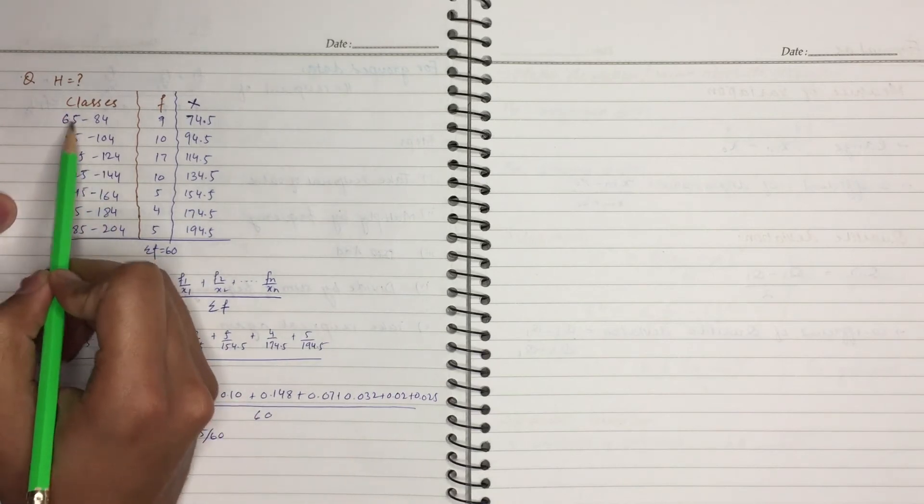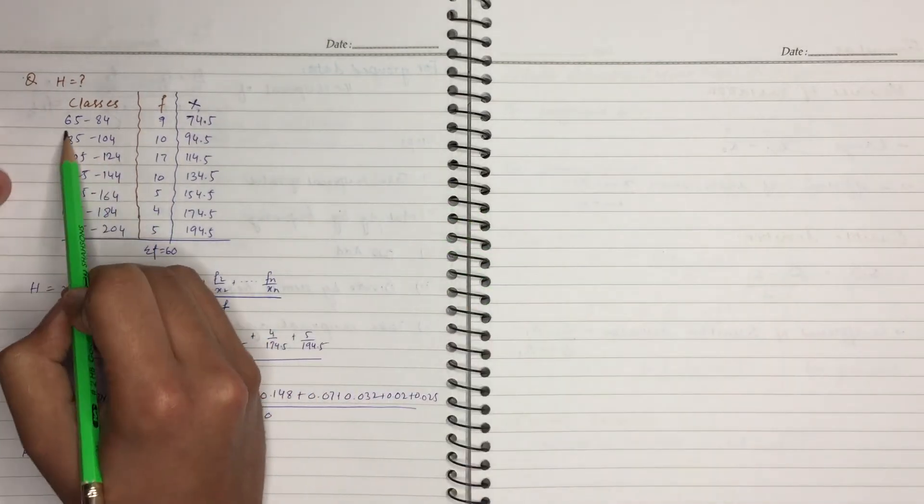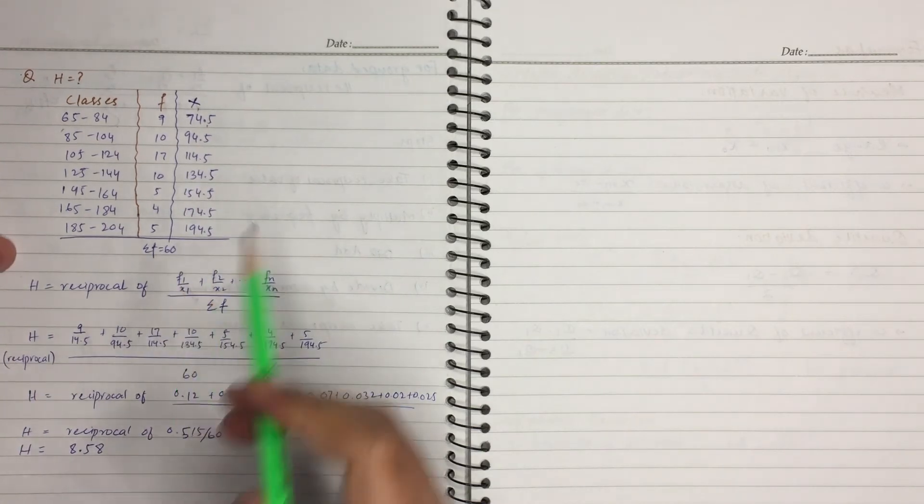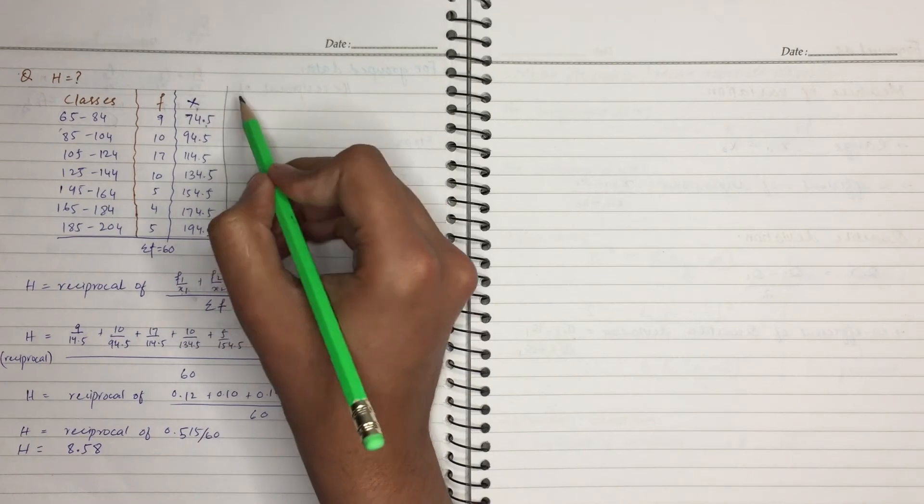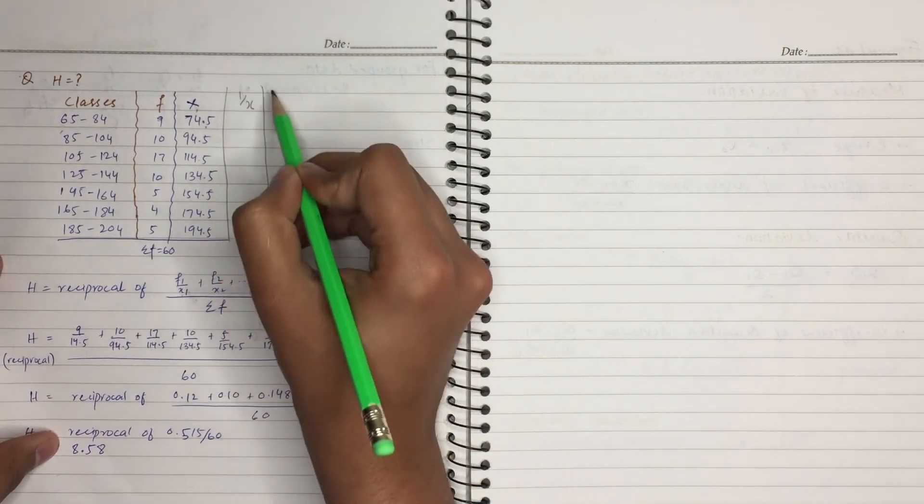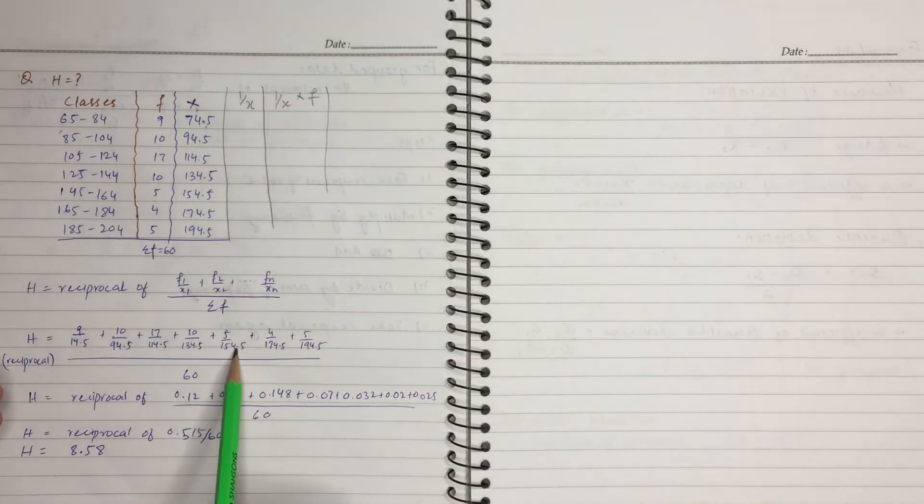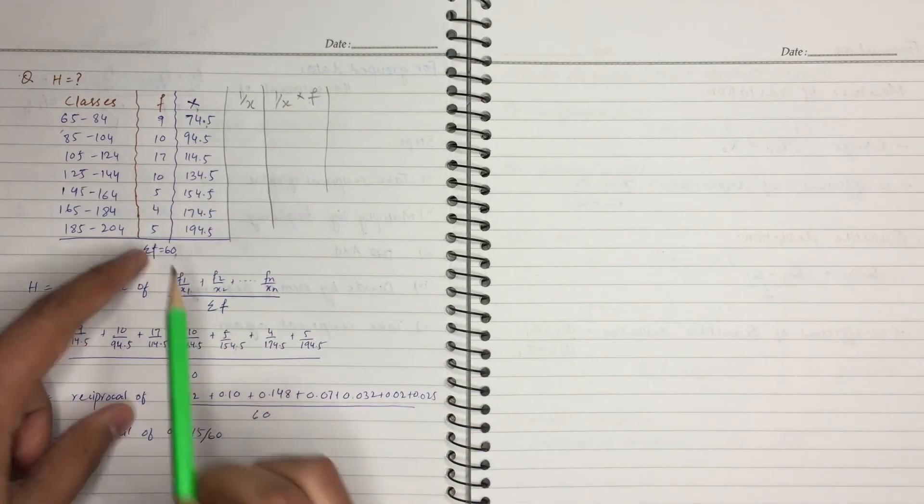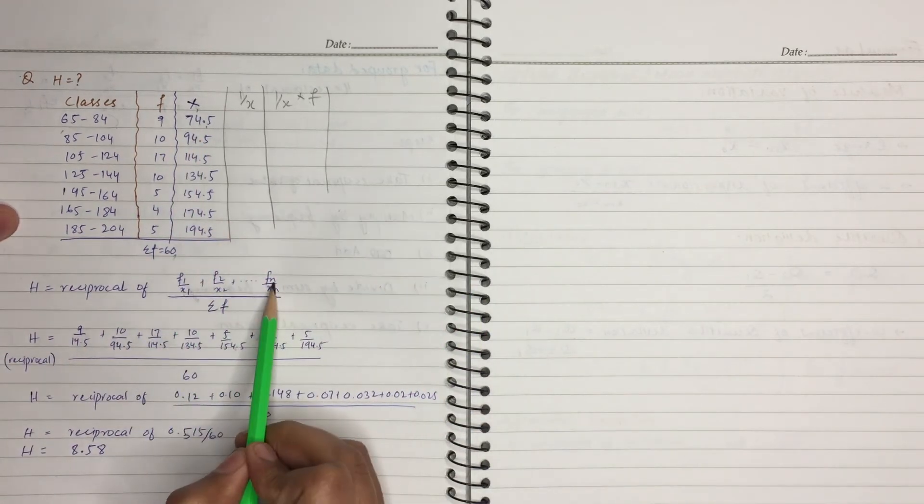So X is the midpoint for us. 65 plus 84 divided by 2 will give us the midpoint that is 74.5. So we have 1 over X, multiply frequency, sum of frequency divide, and then answer step by step this formula.